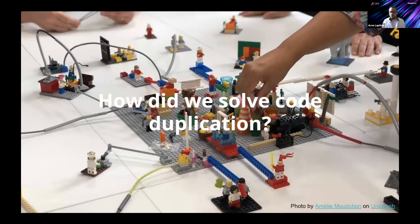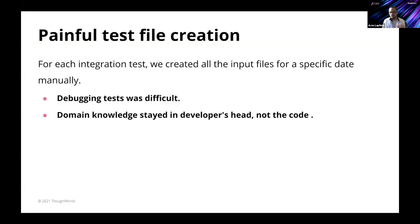The code duplication issue was actually the easiest to solve, because we're all software engineers — we just applied abstraction. We built Lego blocks for creating metrics and tests, and started building new metrics on top of each other. This allowed for more targeted testing and reduced boilerplate code significantly.